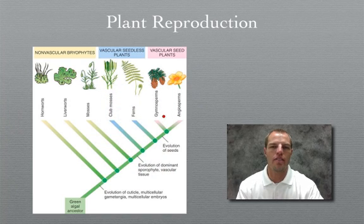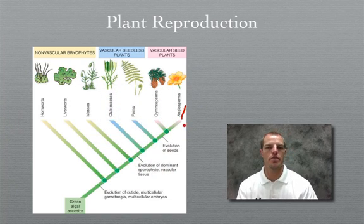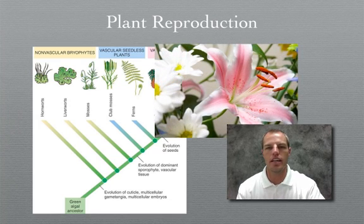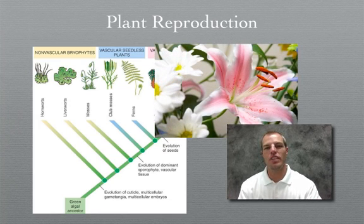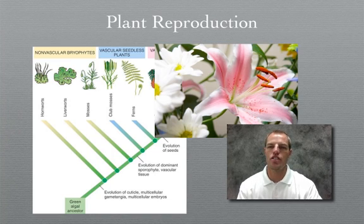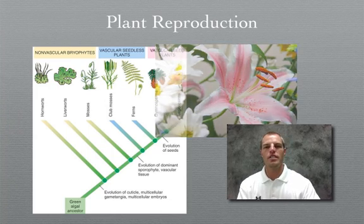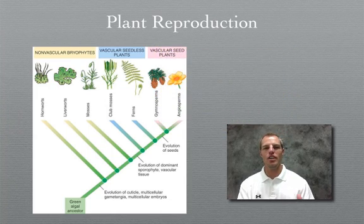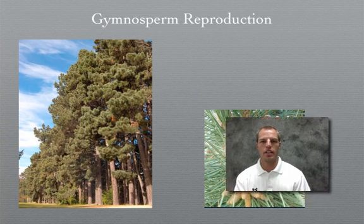The final group is your angiosperms — your flowering plants, like this lily here. Flowering plants produce a flower as their reproductive structure, and generally the seeds for these plants are found in fruit. Today we're going to be looking at gymnosperms, so let's get going.